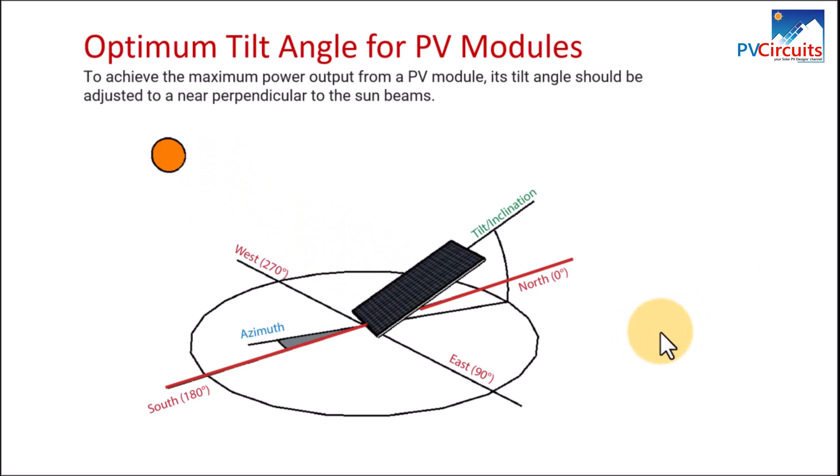So for sites in the north, they'll point their modules towards the equator which is southwards, and for those in the south will point the modules northwards towards the equator. So you see in this diagram it is facing south, implying that this site is in the north.